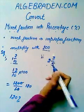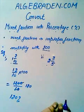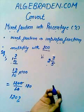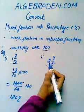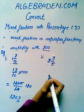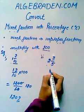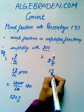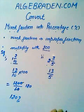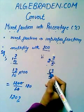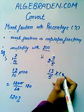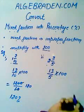Second example: 2 and 3/5. Same as in the first example, convert the mixed fraction into an improper fraction. It gives us 13/5. Now multiply this improper fraction with 100.